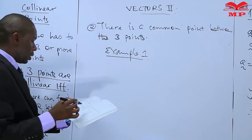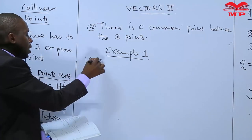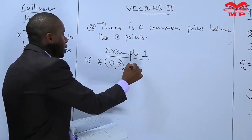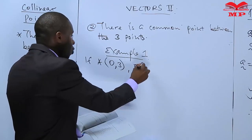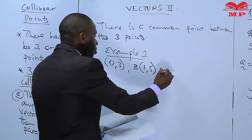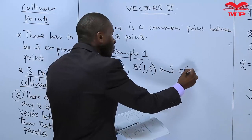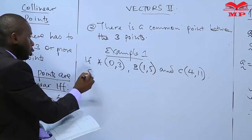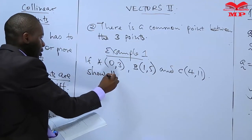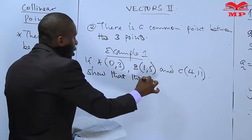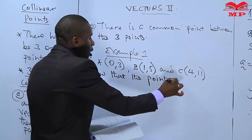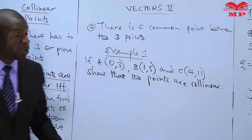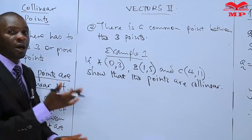In example one, if point A is (0, 3), point B is (1, 5), and point C is (4, 11), show that the points are collinear. I've used two dimensions here; we will take an example of three dimensions later.